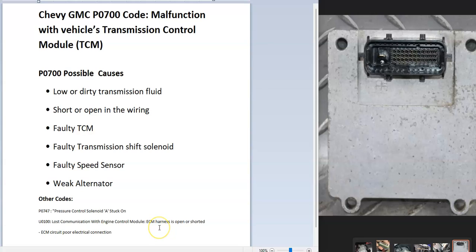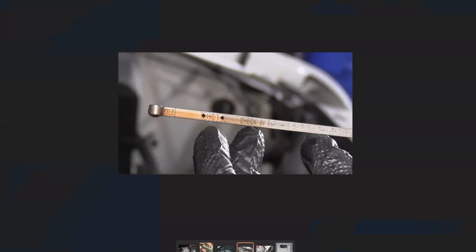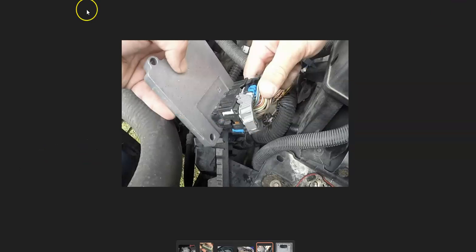Those additional codes will help guide you to what's going on with your particular Chevy or GMC. The first thing to physically check is the transmission fluid — if it's low, really dirty, or otherwise compromised, it can cause issues. Make sure it's at the proper level, since low or dirty ATF can definitely cause problems.